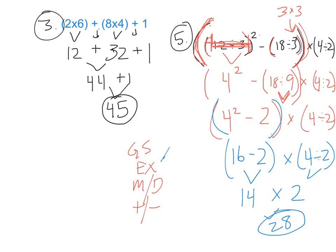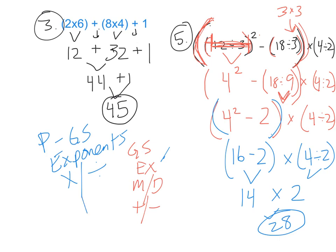Keeping in mind the order of operations: parentheses or grouping symbols come first, then exponents, then the powerful operations of multiplication and division — both in the same step, not one before the other, working left to right. Then the last step is addition and subtraction, and the same rule applies: whatever shows up left to right. I hope this helps, and good luck on your problem set.